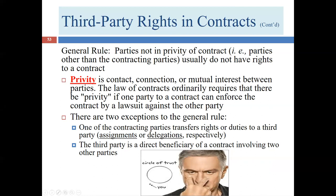Another way of looking at that is to say you are not in privity. Privity is a term in the law meaning contact, connection, or mutual interest between parties. The law of contracts ordinarily requires privity for one person to enforce the contract against the other. People in privity are the people bound by the contract's terms. A third party is not in privity and generally has no rights to a contract — they can't force the first and second parties to follow its terms.